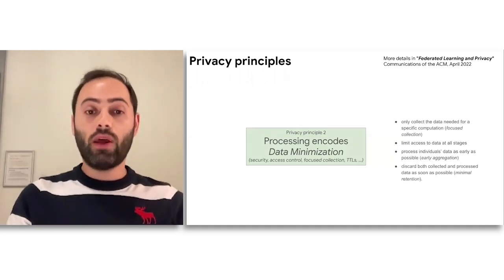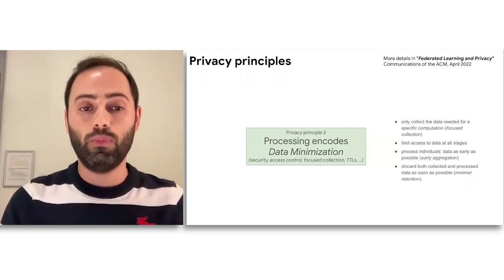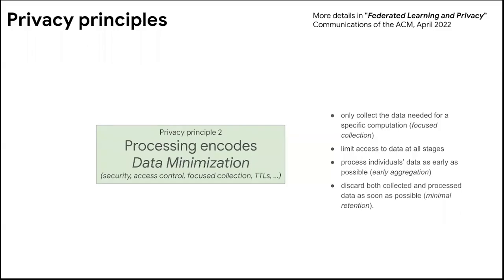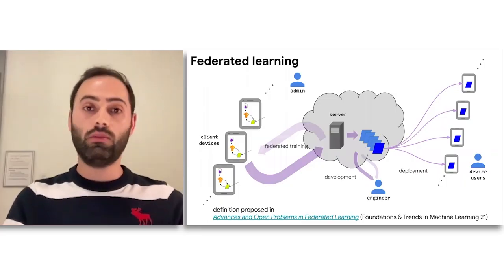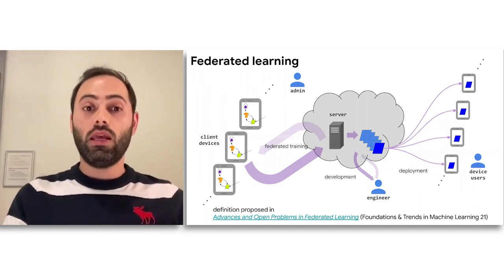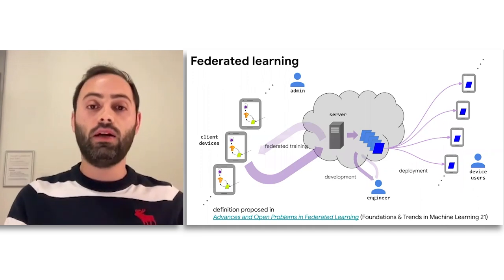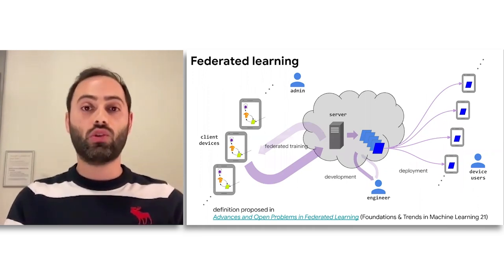Moving on, we can talk about the second privacy principle, which is data minimization. This is about only collecting the data that is needed for a specific computation, limiting access to the data at all stages, processing an individual's data as early as possible, and discarding any collected and processed data as soon as possible. So there's early aggregation and minimal retention with focused collection. On this principle, a technology called federated learning — which is getting a lot of attention in academia and industry — is very helpful for minimizing the data that the server and service providers actually have access to.